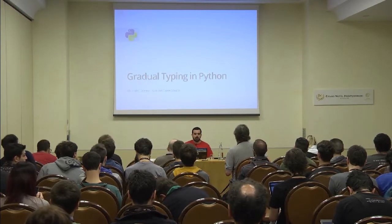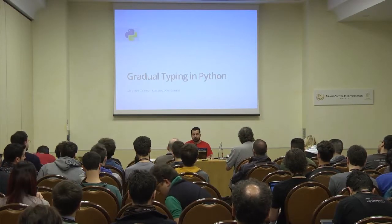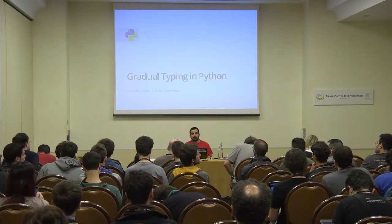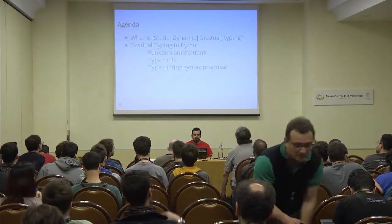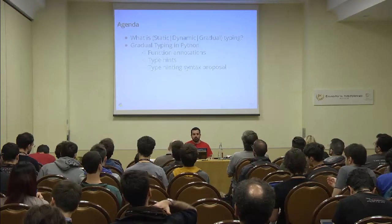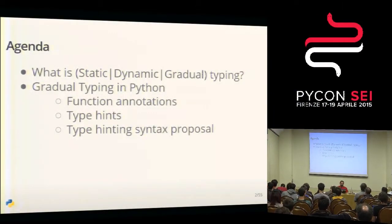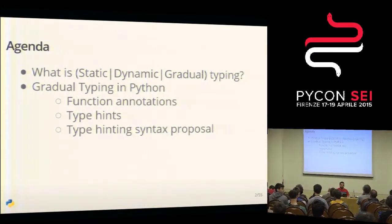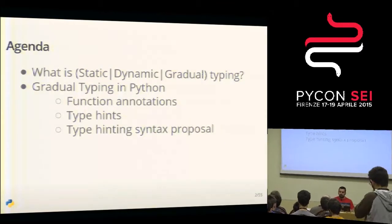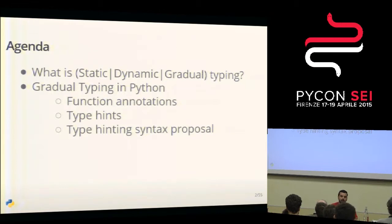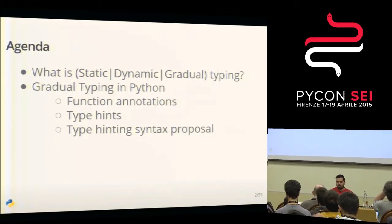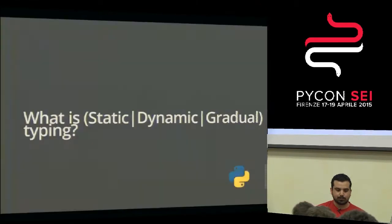I'm from Kaleidos, and I'm going to talk about gradual typing in Python - the new proposal for Python 3.5. We're going to make an overview about what is static, dynamic, and gradual typing. Then I will explain what makes this possible in Python, which is function annotations. We will see how we can give type hints in our Python programs, an overview of the type hinting syntax proposal, and some examples of gradually typed Python programs and how they fail to type check.